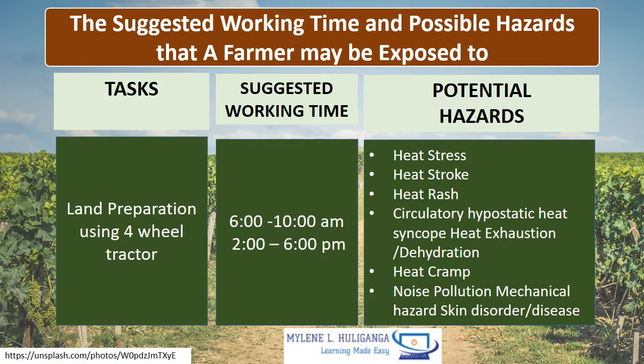Task: Land preparation using four-wheel tractor. Suggested working time is 6 a.m. to 10 a.m. and 2 p.m. to 6 p.m. The potential hazards are heat stress, heat stroke, heat rash, circulatory hypostatic heat syncope, heat exhaustion, dehydration, heat cramp, noise pollution, mechanical hazard, and skin disorders or disease.